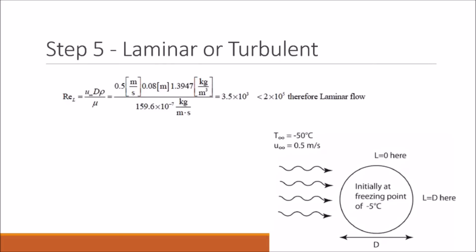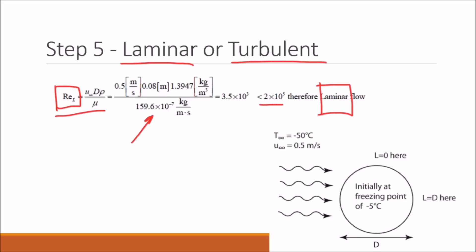In step 5 we determine whether the flow is laminar or turbulent, and the way to do this is to find our Reynolds number. Using our equation for Reynolds number and plugging in our variables, we find that the Reynolds number is less than 2×10⁵, so we're dealing with a laminar flow.